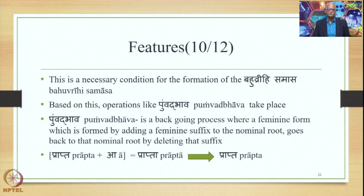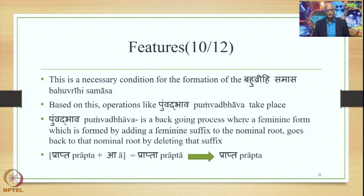Pumbad bhava is a back-going process where a feminine form, formed by adding a feminine suffix to the nominal root, goes back to that nominal root by deleting that feminine suffix. So if 'prapta' is derived by adding the feminine suffix 'a' to 'prapta', pumbad bhava says it goes back to 'prapta' by deleting that suffix. That is why the vigraha is 'prapta vidya yena saha' and the finally derived compound output has prapta vidya and not prapta vidya.